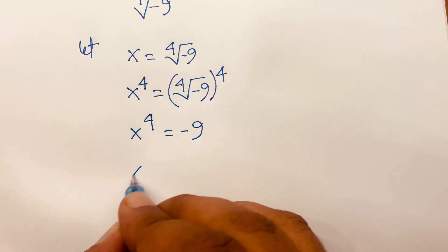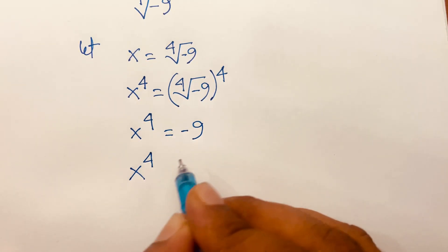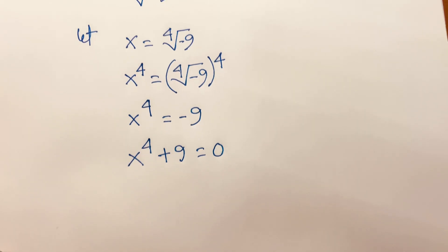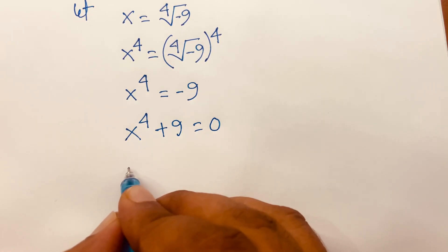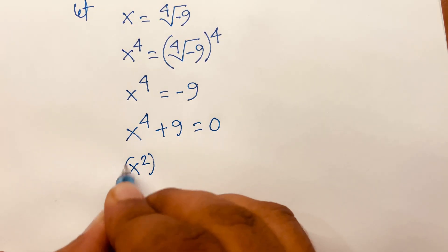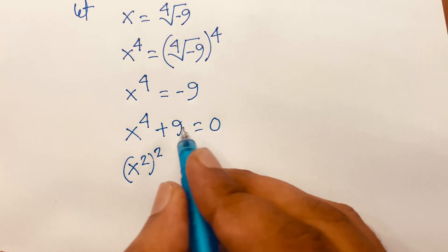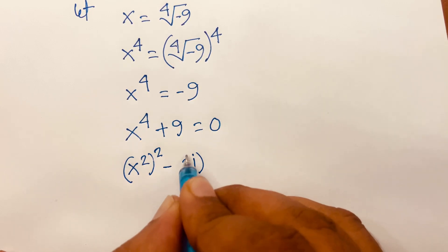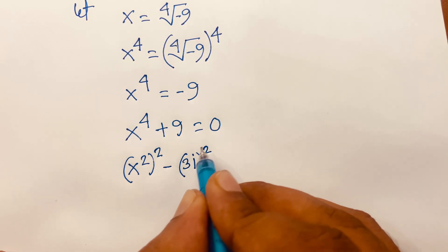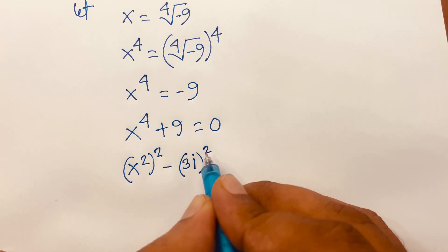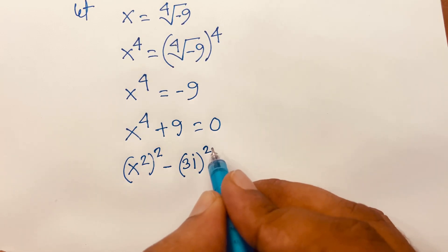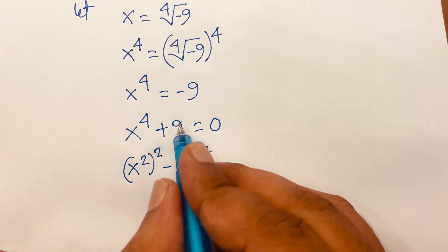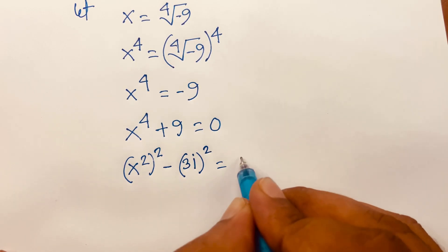Then I can say x to the power 4 plus 9 is equal to 0. This becomes x squared, bracket to the power 2, plus 9. Now 9 can be written as minus 3i, bracket to the power 2, because 3 squared equals 9 and i squared equals minus 1, so minus 1 times minus gives plus. That's why 9 is equal to minus 3i whole squared.